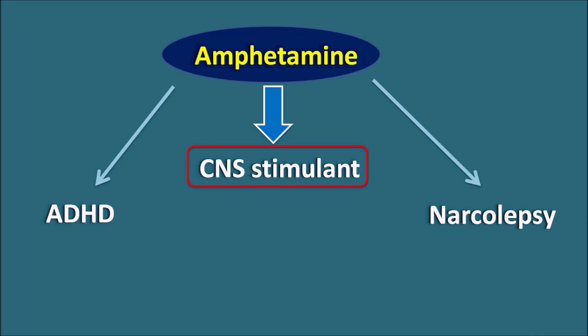These are the two important clinical indications of amphetamine, but apart from these, this drug can produce many types of central as well as peripheral actions, all of which are mainly attributed to the action of amphetamine on the sympathetic system. Let us see how this drug increases the sympathetic stimulation.